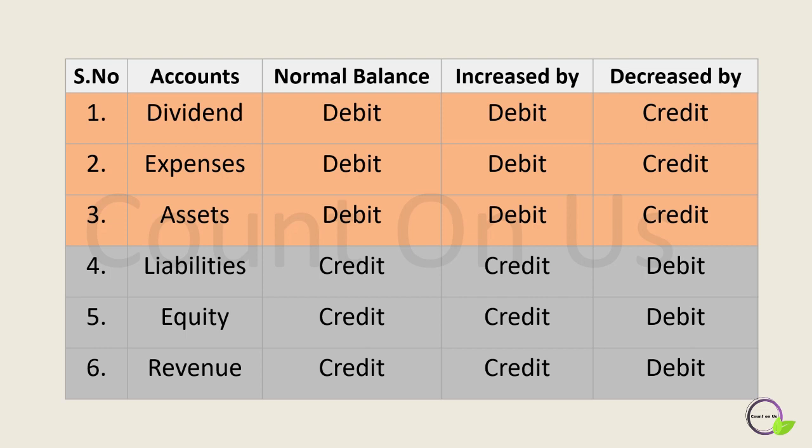If those accounts decrease, the opposite will happen. The first three accounts — dividends, expenses, and assets — are debit balances when they increase, and credit balances when they decrease. The last three accounts — liabilities, equity, and revenue — are credit balances when they increase, and debit balances when they decrease.